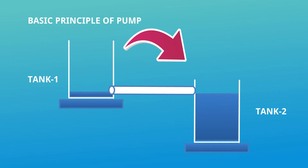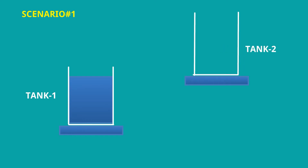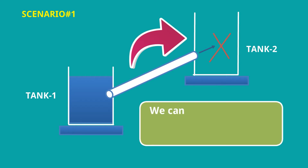Scenario 1: Tank 1 is filled with some fluid, and tank 2 is kept at a higher elevation with respect to tank 1. How do we transfer the fluid from tank 1 to tank 2 when tank 2 is at higher elevation? If we connect a pipe and valve arrangement and open the valve, the fluid will not transfer. We cannot transfer fluid from lower elevation to higher elevation without special equipment.